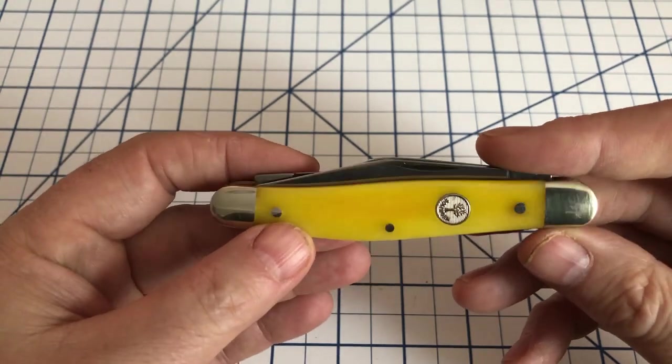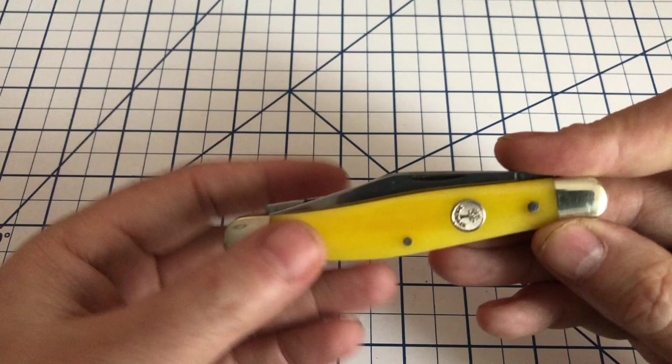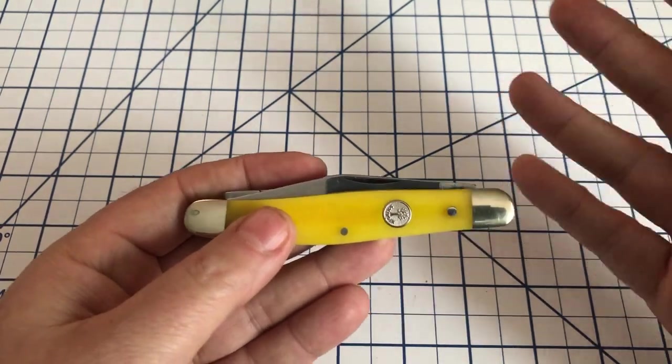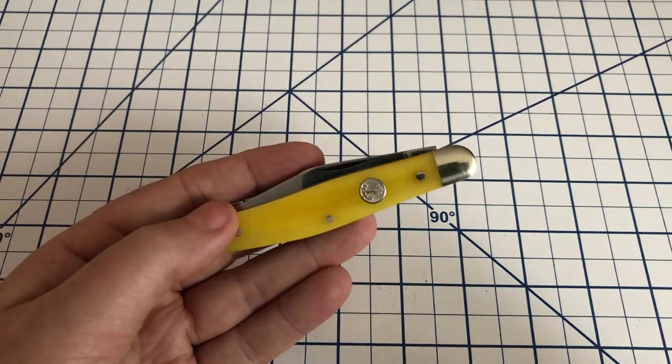This knife has been discontinued by Boker. They still make the 7474 but the yellow bone, at least this yellow smooth bone has been discontinued. Whether they'll bring it back or not, I cannot tell you.